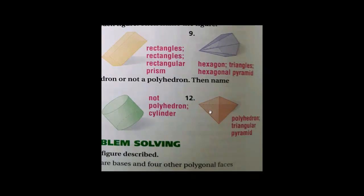Question twelve — all the faces and bases are flat, so it's a polyhedron. We have only one base, so it's a pyramid. The base is a triangle and the faces are also triangles, so it will be a triangular pyramid.